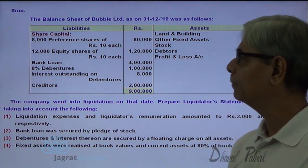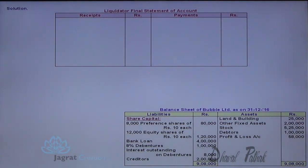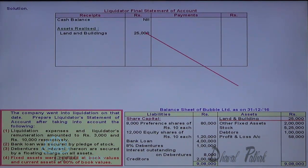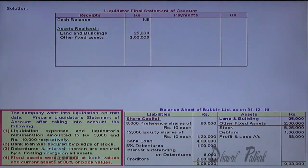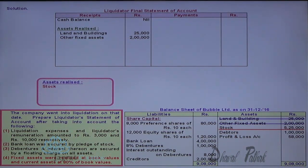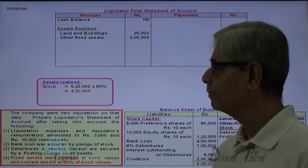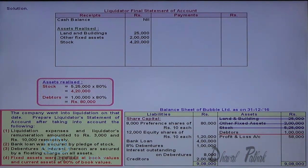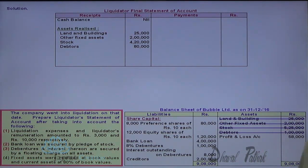Now let me start preparing the liquidator's statement. There is no opening cash balance. Under assets realized: fixed assets — land and building realized book value; other fixed assets also realized book value. Current assets realize 80% of book value: stock 80% of 25,000 into 80% works out to 20,000 realized for stock. Debtors are also current assets — 80% thereof is realized, so 1 lakh into 80% gives 80,000 realized for debtors.